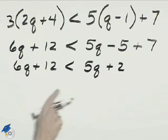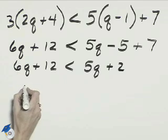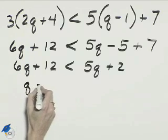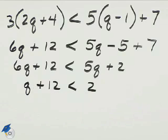Now we can subtract 5q to the left. Subtracting 5q from 6q is positive 1q plus 12, less than 2.